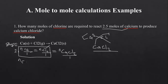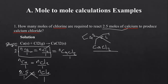We write: number of moles of calcium over 1 equals number of moles of Cl2 over 1. They've given us 2.5 moles of calcium, so we write 2.5 over 1 equals NCl2 over 1. Cross-multiplying, 1 times number of moles of chlorine equals 2.5 times 1, giving us 2.5 moles. The number of moles of chlorine is equivalent to 2.5 moles — that is your answer.